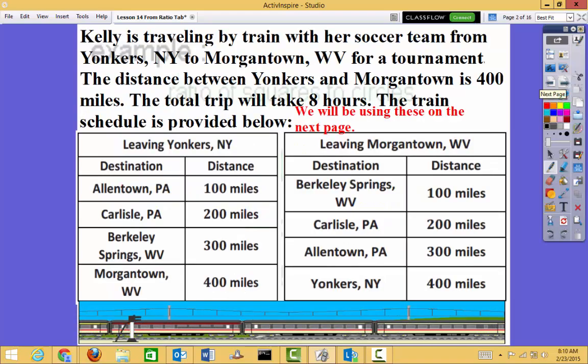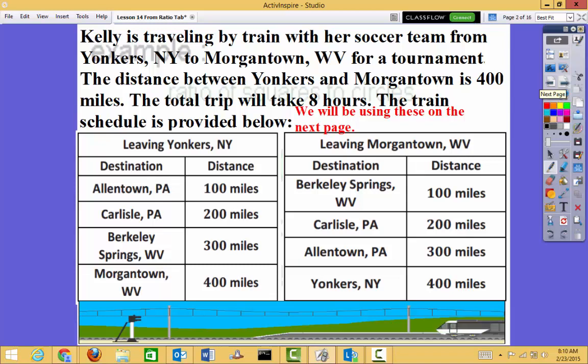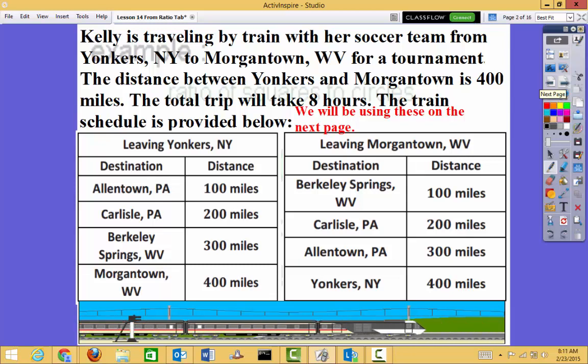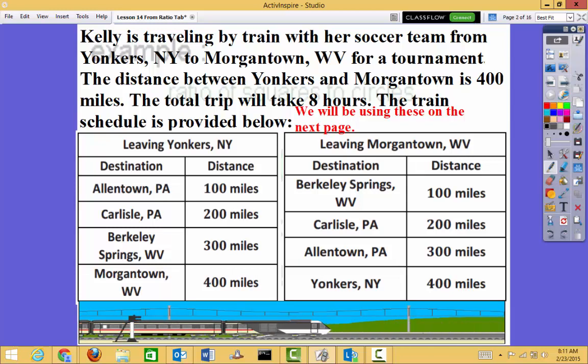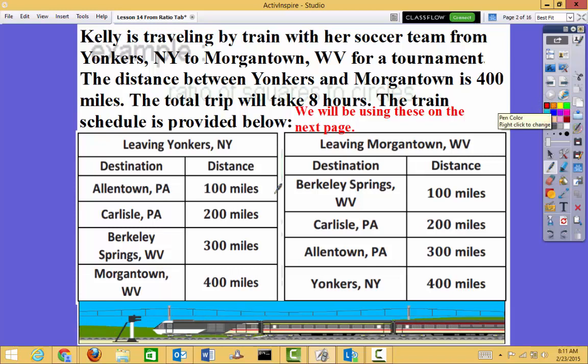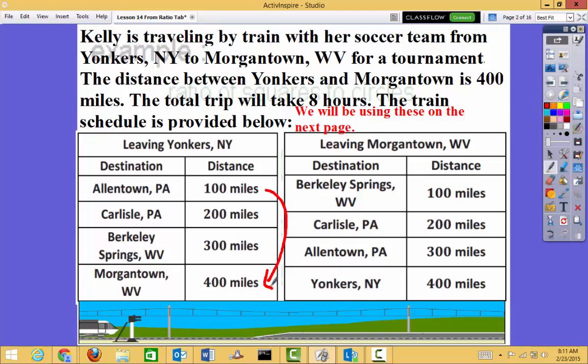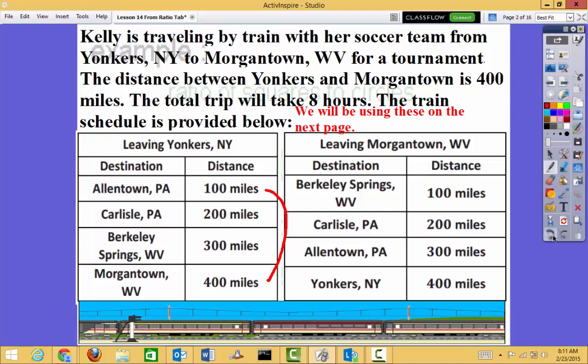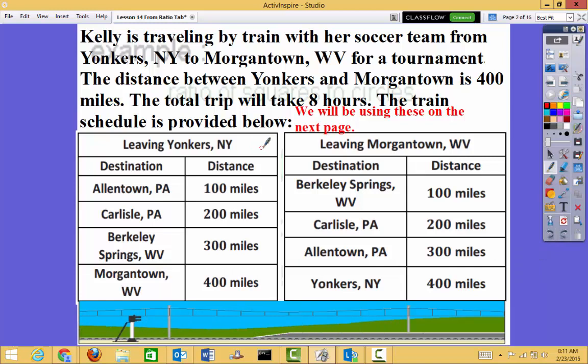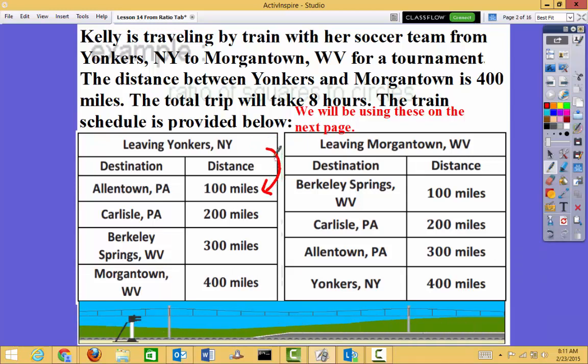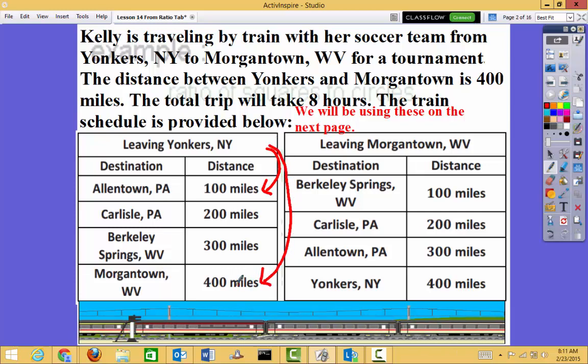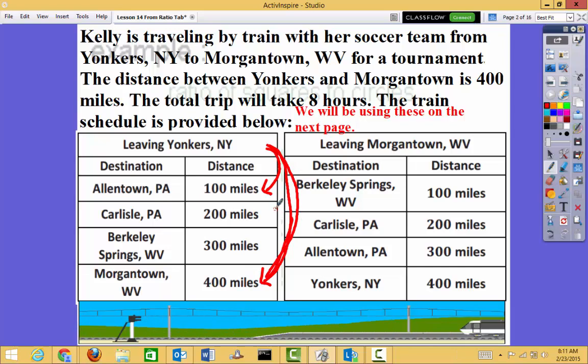So here's our first problem. Kelly is traveling by train with her soccer team from Yonkers, New York to Morgantown, West Virginia for a tournament. The distance between Yonkers and Morgantown is 400 miles. The total trip will take 8 hours. The train schedule is provided below. So let's just go over to make sure we understand it clearly. Total trip is going to take 8 hours. From Yonkers, New York to Allentown is 100 miles. From Yonkers to Morgantown, that's going to be 400 miles. This total trip right here, that's going to be that 8 hours.